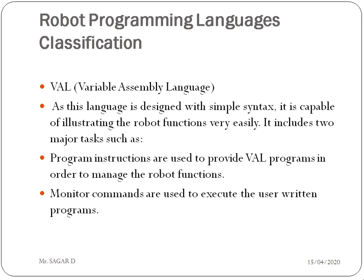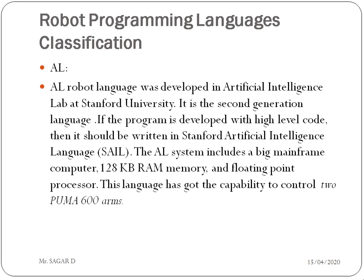VAL (Variable Assembly Language) program instructions are used to manage the robot function, and monitor commands are used to execute the user program. The fourth language is AL — developed in artificial intelligence (AI). AL is a second generation language. Programs with high-level code should be written in SAIL — Stanford Artificial Intelligence Language. The AL system includes large mainframe computers with a configuration of 128 KB RAM and a floating point processor. This language can control two PUMA 600 arms.